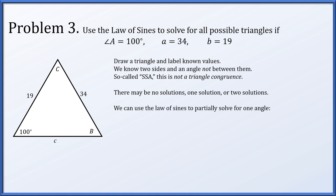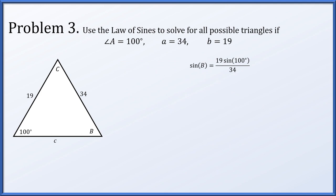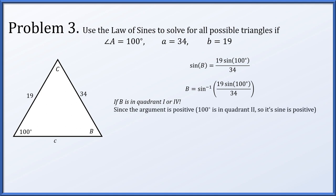We can use the law of sines to partially solve for one angle. The sine of A over a must equal the sine of B over b. A is 100°, little a is 34, and little b is 19. This allows us to solve that while I don't know angle B, I know its sine has to be 19 sine 100° over 34. We could just take an arcsine. Remember that the range of the arcsine function is quadrants 1 and 4. Since 100° is a quadrant 2 angle, its sine is positive, so we're taking the arcsine of something positive, meaning B from this arcsine is the quadrant 1 angle.